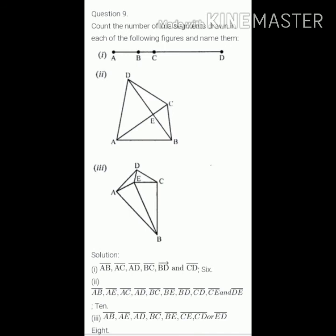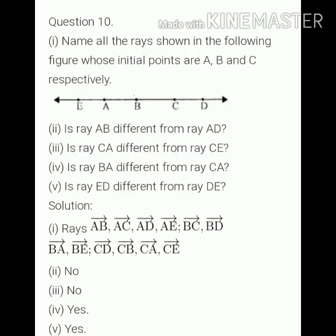Write their names from this solution. Question number ten. First part is, name all the rays shown in the following figure whose initial points are A, B, C respectively.